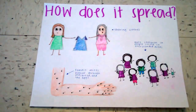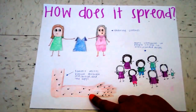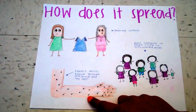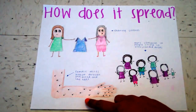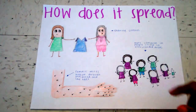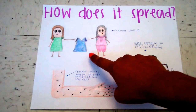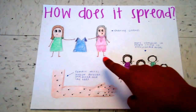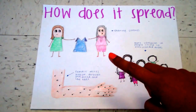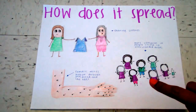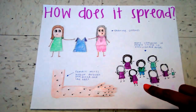How does it spread? Scabies is spread when female mites burrow through the skin, breed, and lay their eggs — then the cycle continues. It also spreads when you share clothes and touch an area that has already been touched by an infected person. People living in overcrowded areas are more likely to catch the disease.